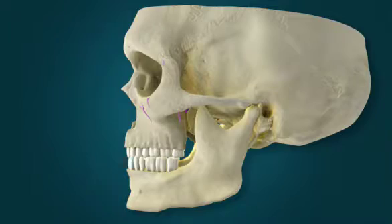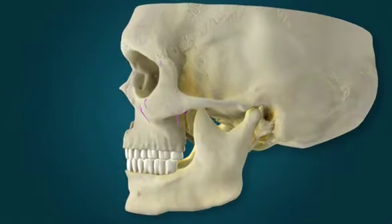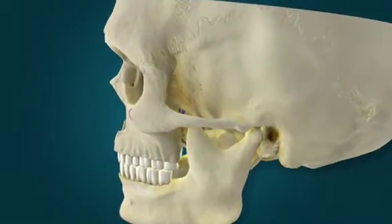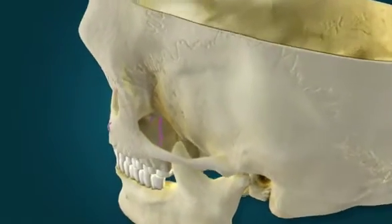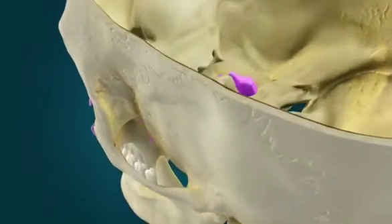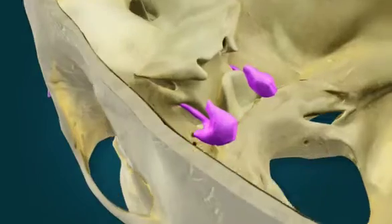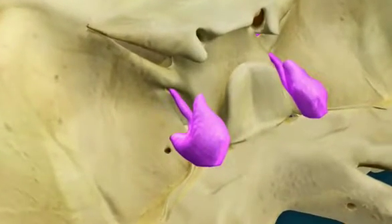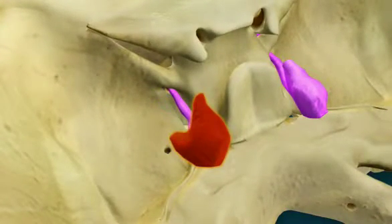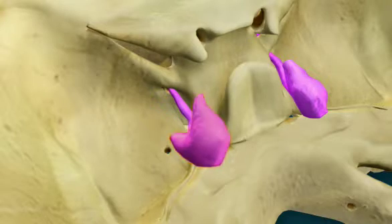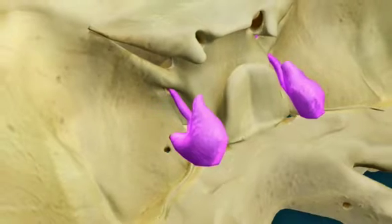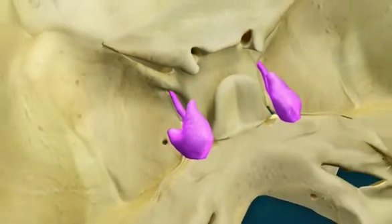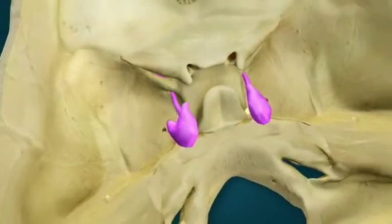The maxillary nerve traverses the foramen rotundum to enter the middle cranial fossa. It joins the trigeminal ganglion, which contains the sensory cell bodies for the trigeminal nerve.